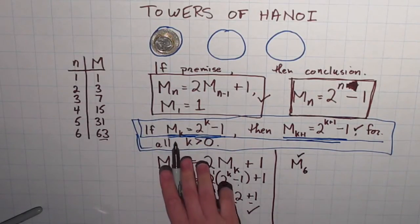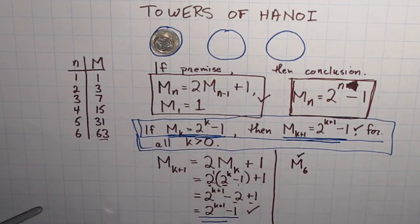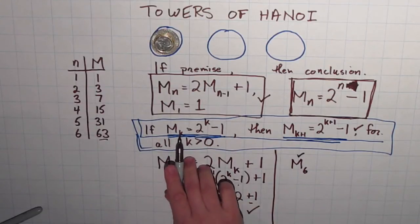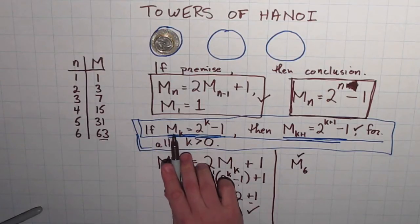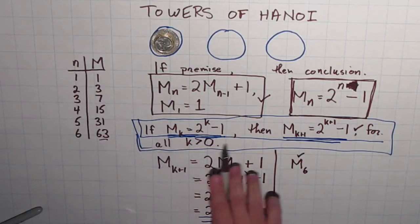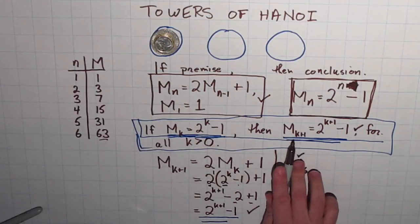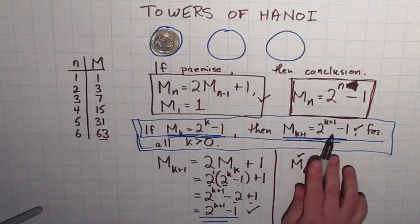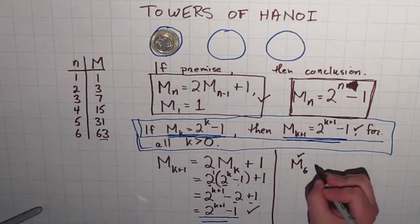Now, let's consider this statement that I have in blue. And replace the 6 with a k. If M_6 equals 2 to the 6 minus 1, which is true, it's right there. Then, k plus 1 would be 7. Then, M_7 equals 2 to the 7 minus 1. So, in other words, because I know that it works for 6 coins.